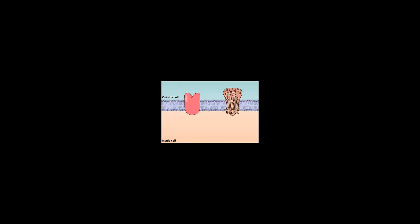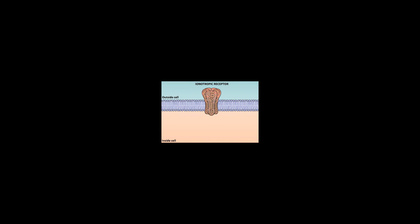The opening or closing of postsynaptic ion channels is accomplished in different ways by two broad families of receptor proteins. Ionotropic receptors are multimers made up of at least four or five individual protein subunits, each of which contributes to the pore of the ion channel. Ionotropic receptors contain two functional domains: an extracellular site that binds neurotransmitters, and a membrane-spanning domain that forms an ion channel. When a transmitter or ligand binds to an ionotropic receptor, the channel becomes activated and ions can flow through.